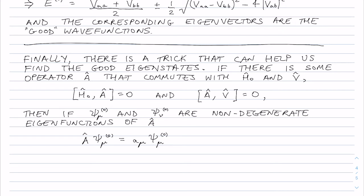And we have A psi nu naught equals a_nu psi nu naught, with a_mu not equal to a_nu. In other words they're non-degenerate with respect to A. Then V_mu_nu is equal to zero.